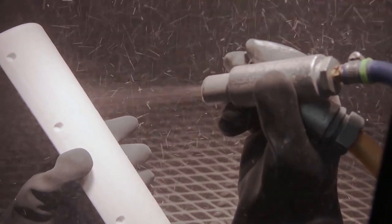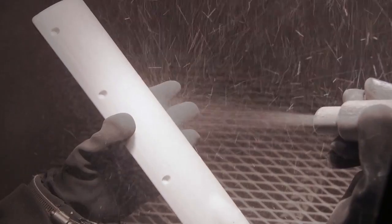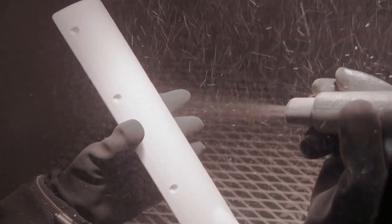Media blast the part using a continuous, sweeping motion similar to that for spray painting. To avoid damaging the part, hold the nozzle a minimum of 6 inches from the part and use several light passes across the part surface. Do not dwell in one area.